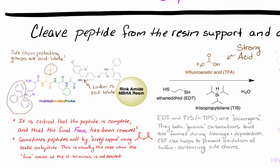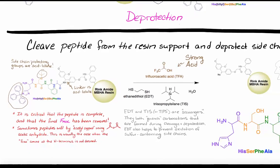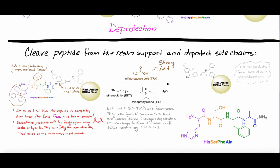TFA is often used as a cocktail with water and carbocation scavengers like EDT and TIS. This reaction, left for 1-4 hours, will yield the free peptide with unprotected side chains. The free peptide is now in solution and can be washed away from the resin, however it will also be mixed with other side products. Recrystallization and chromatography are usually used to purify the final peptide from the products of side chain deprotection.